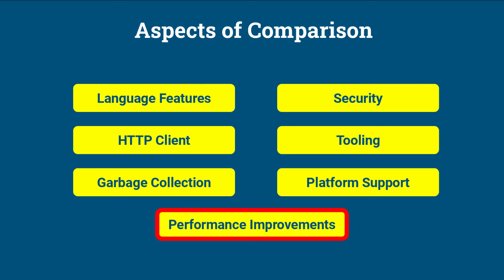Performance Improvements. Java 8 introduced the Nashorn JavaScript engine, which provided performance improvements for JavaScript execution on the JVM. Java 11 includes various performance improvements and optimizations, although specific details may vary depending on the use case.